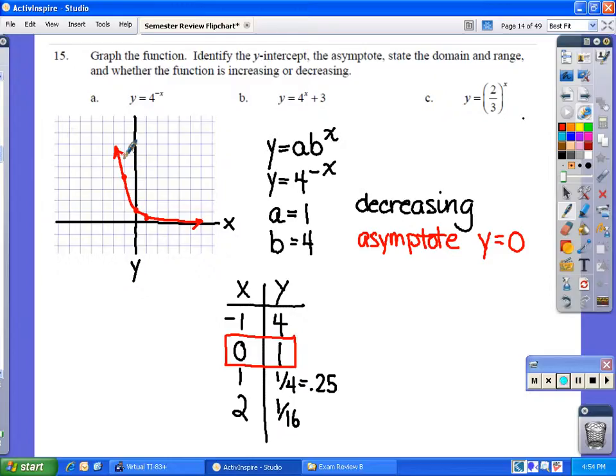That gives us our asymptote, which we can draw in here as a dotted line, right on the x-axis. And that would be our basic graph.